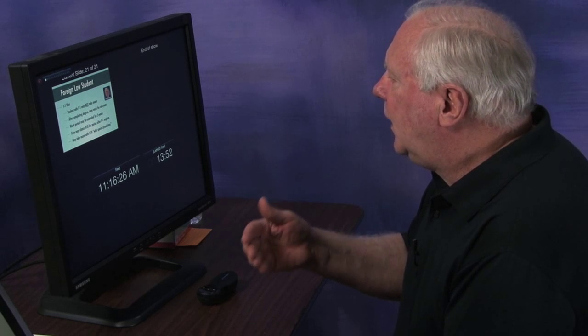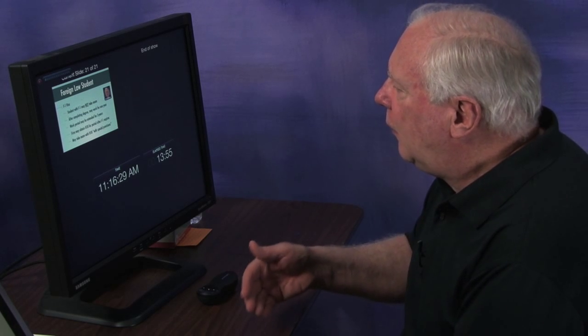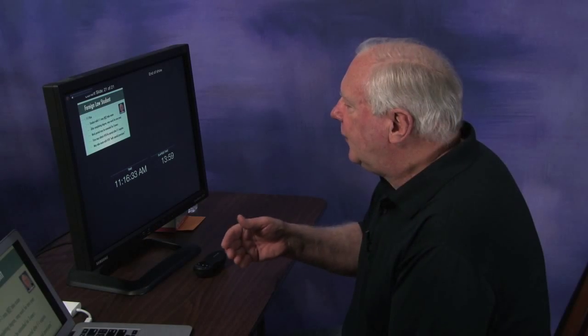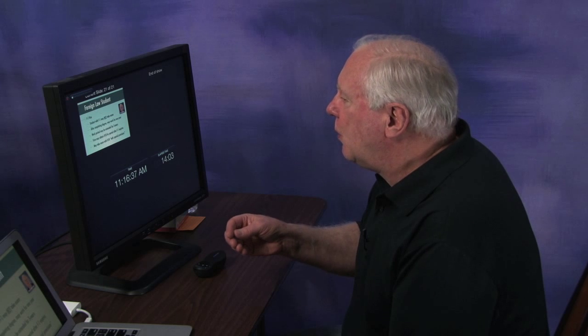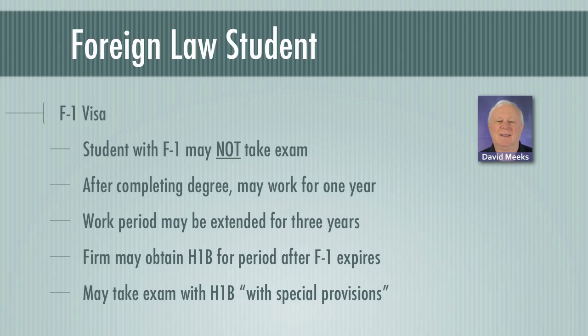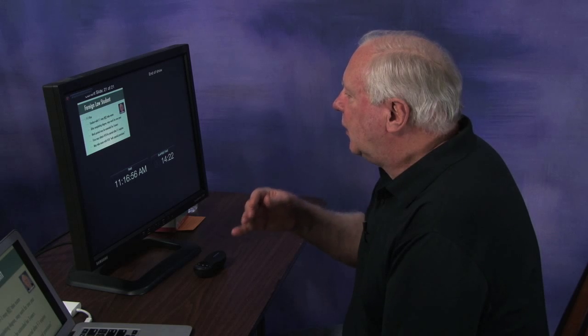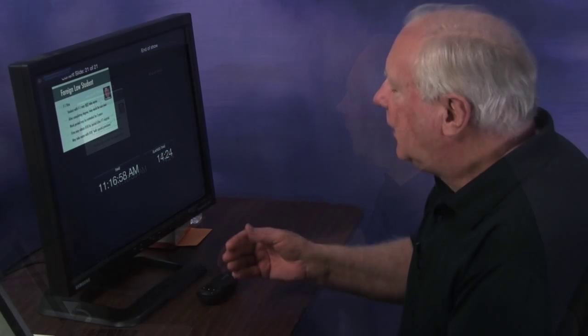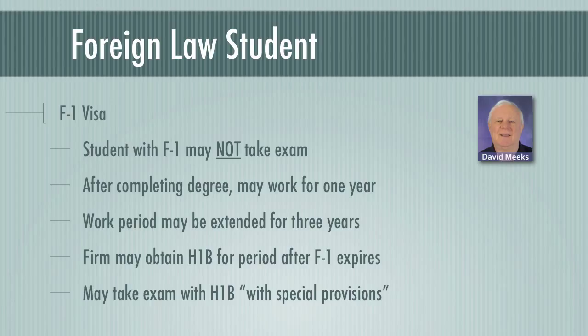At the point where the F-1 visa is going to expire, hopefully your employer has obtained an H-1B temporary work visa for you. With that visa, if it includes a provision that you plan to procure patents on behalf of your employer, you can then take the Patent Bar. So the pathway is: you come, get your degree, work for up to four years doing patent work, your employer obtains an H-1B visa, and with that visa you can take the Patent Bar. Thanks for watching our video.